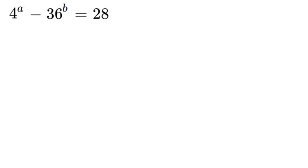Welcome to another Olympian math video. In this video we are solving for A and B. The equation we got is 4 to the power of A minus 36 to the power of B is equal to 28.